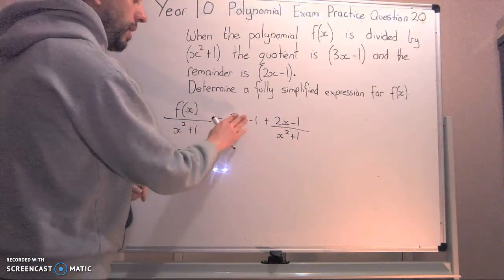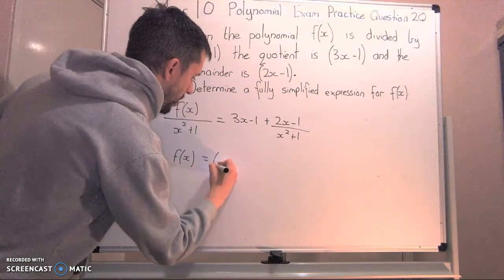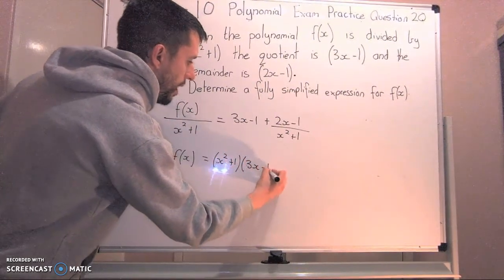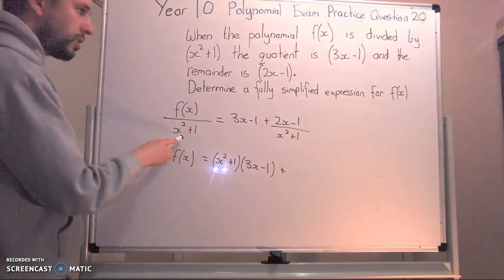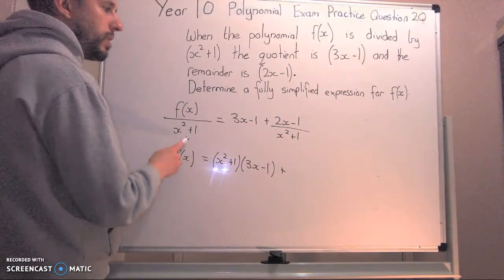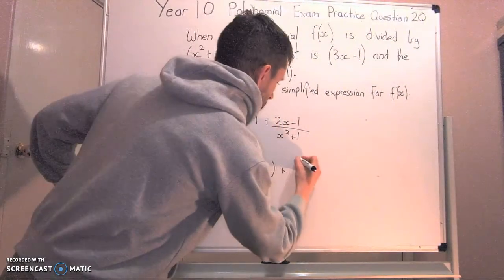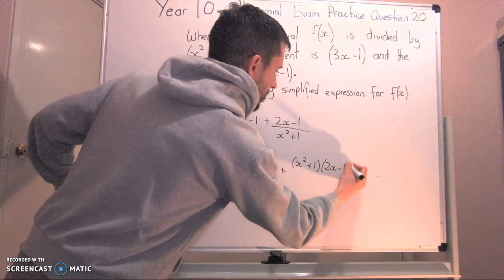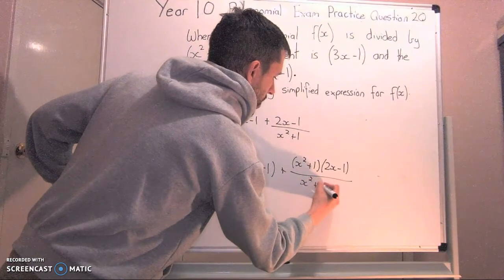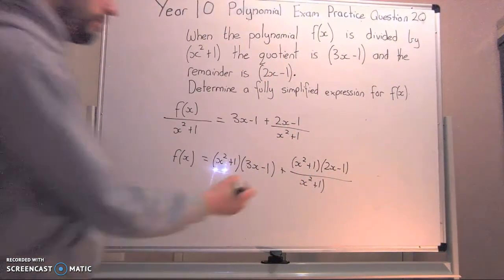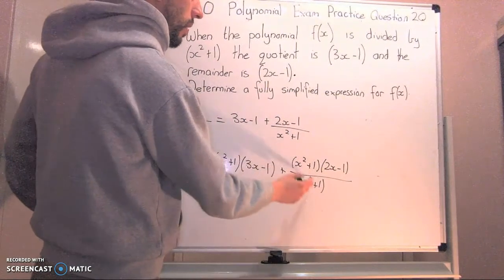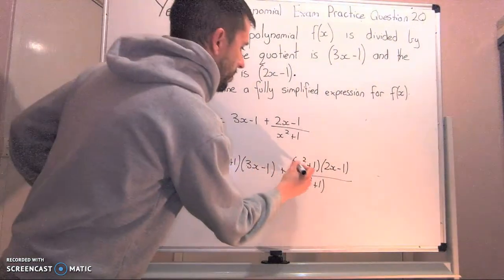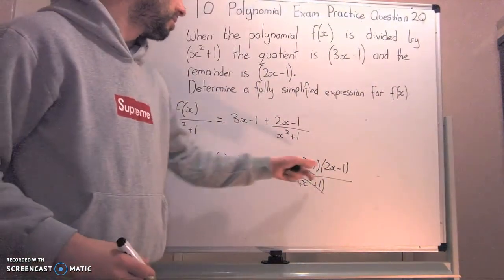x squared plus 1 times everything. So I've got x squared plus 1 times 3x minus 1. x squared plus 1 times the fraction, and when we times with a fraction, it goes with the numerator. So x squared plus 1 times 2x minus 1 over x squared plus 1. As you can see, x squared plus 1 cancels out, so I'm just left with plus 2x minus 1.